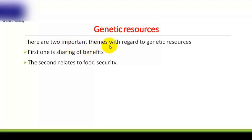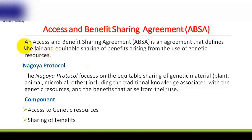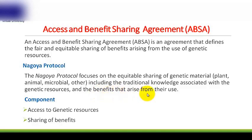There are two important themes with regards to genetic resources. The first theme is sharing of benefits arising from use of genetic resources by commercial organisms. The second relates to food security. An access and benefits sharing agreement is an agreement that defines the fair and equitable sharing of benefits arising from the use of genetic resources. If we want to use genetic resources, we need to follow a protocol called the Nagoya Protocol. The Nagoya Protocol focuses on the equitable sharing of genetic material such as plant, animal, microbial, or any other, including the traditional knowledge associated with the genetic resources and the benefits that arise from their use.